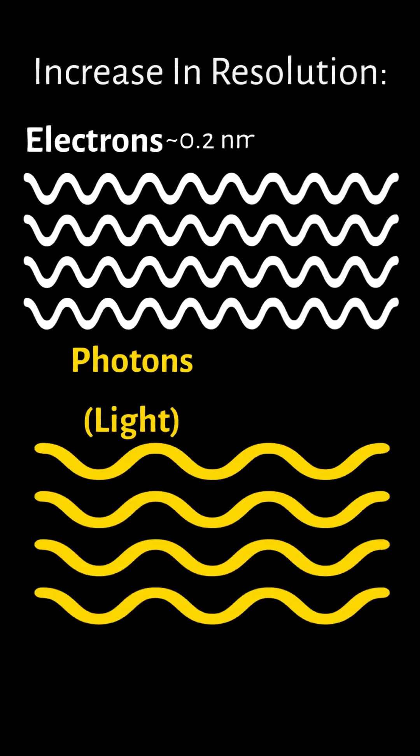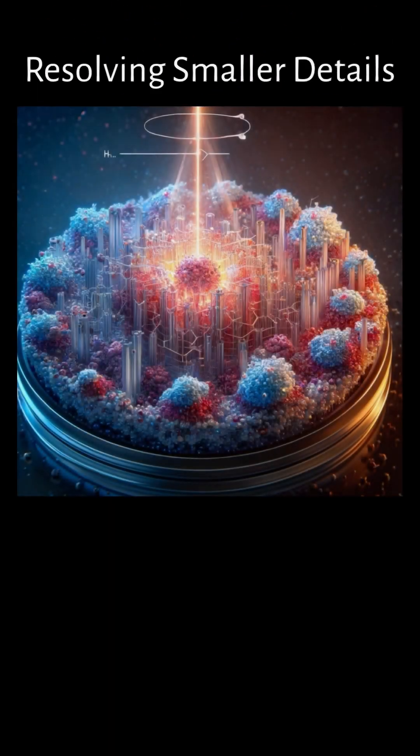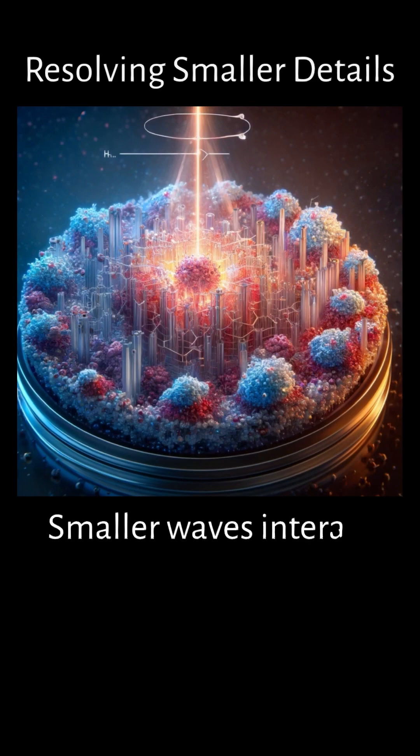The increase in resolution comes from the shorter wavelengths of electrons compared to the photons in light, resolving smaller details because they can interact with and be diffracted by smaller features within the sample.